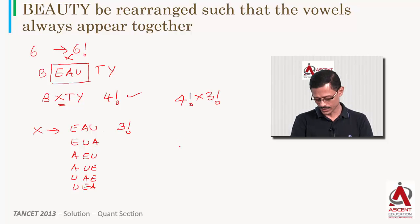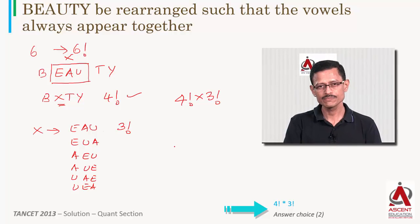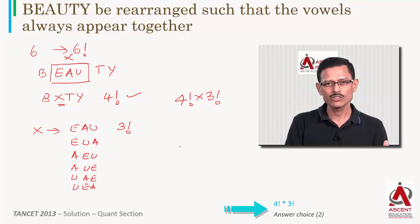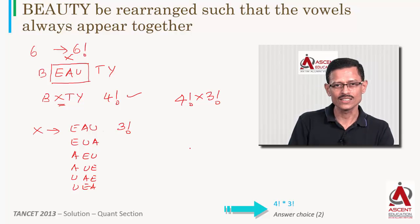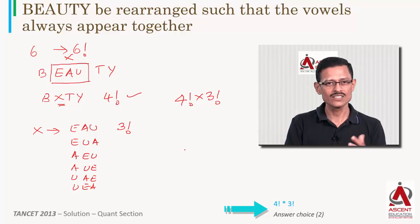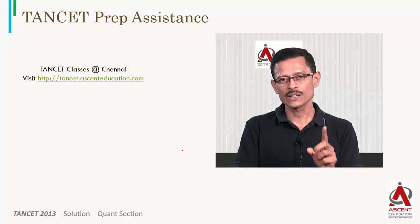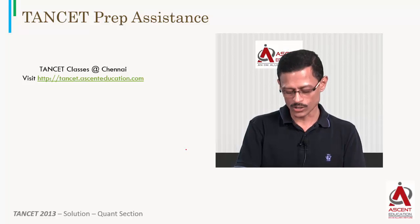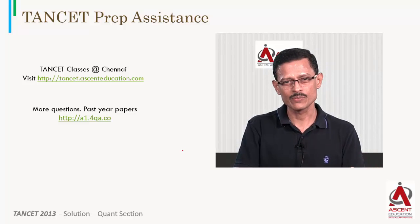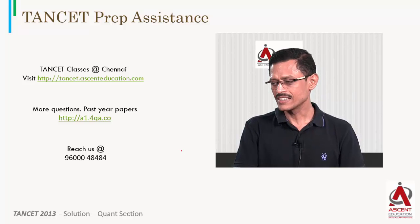So the answer is 4 factorial into 3 factorial, which corresponds to answer choice 2. This is the core idea behind this permutation and combination question — a common concept in the TANCET exam. For TANCET prep, visit tancet.accenteducation.com or past year question papers at a1.4qa.co, or reach us at 96000 48484.